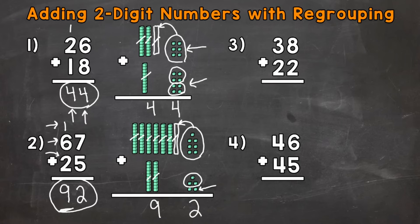Let's move on to numbers 3 and 4. And in these problems, we're not going to use base 10 blocks. We'll start with number 3, where we have 38 plus 22. Start with the ones. So 8 plus 2, that gives us 10. So 1 group of 10. So we put our 0 here.